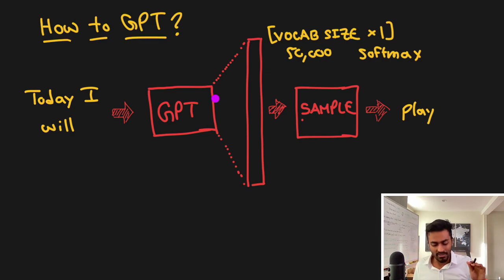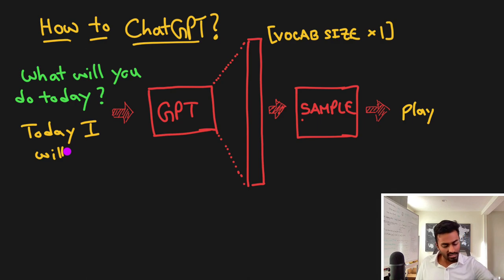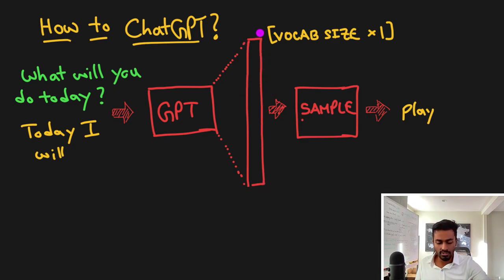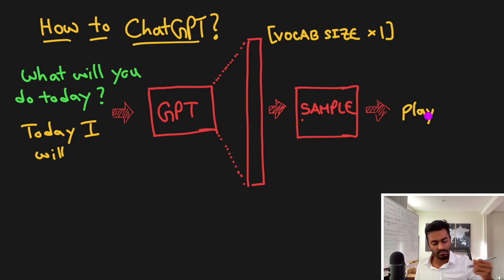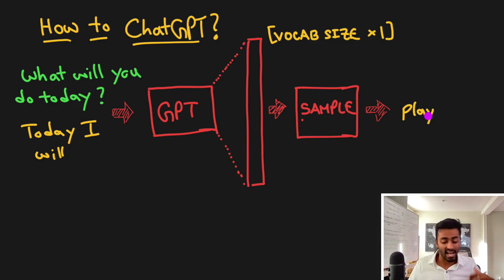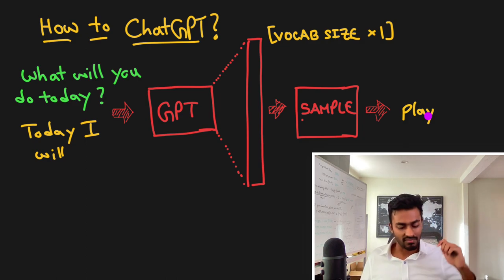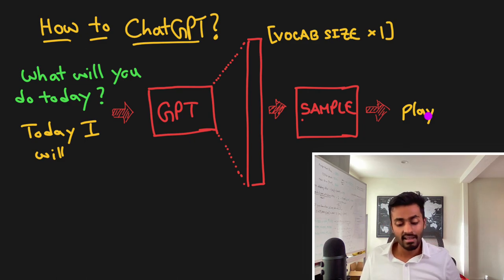ChatGPT is clearly based on many concepts: language modeling, transformer neural networks, and GPT architectures that came before it. For example, if asked 'what will you do today?', ChatGPT generates 'today I will' as the first three words, then at the fourth word it goes through the GPT architecture, creates the large vocab-size vector, converts it to a probability distribution via softmax, and samples to get the next word — generating one word at a time.